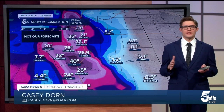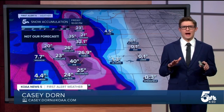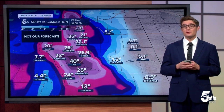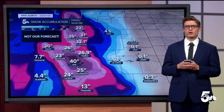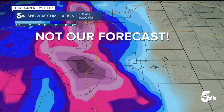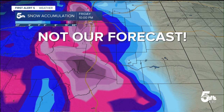Have you ever been on social media and seen a snow map that looks like this? This is one of our forecast model's predictions for the upcoming snowstorm that ran yesterday. Our weather team didn't show you this map — we don't show you the hype. We show you the model data and then use our own knowledge to produce snow forecasts like the ones you've seen for this week's storm.